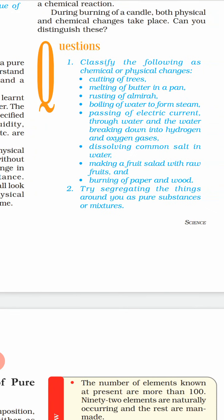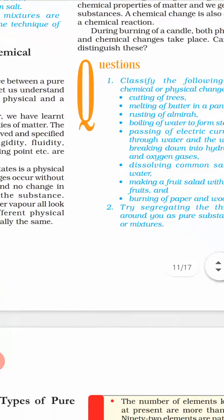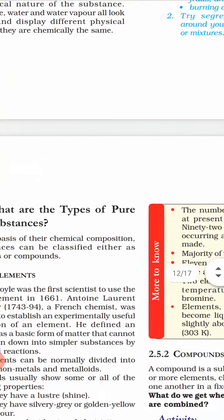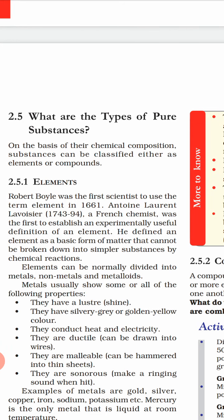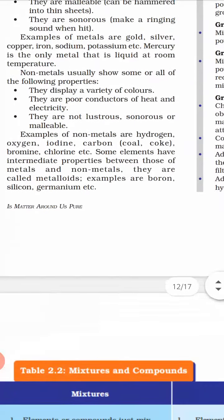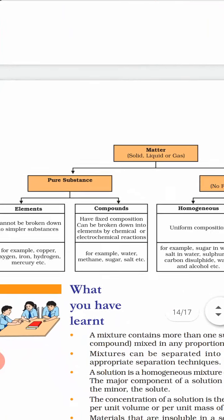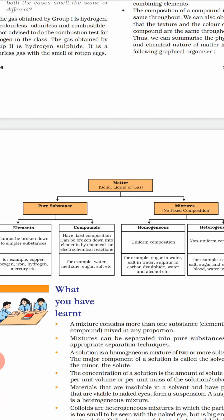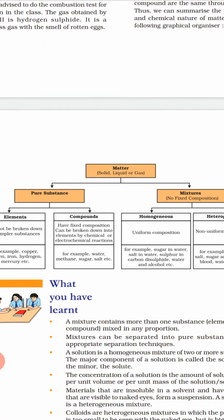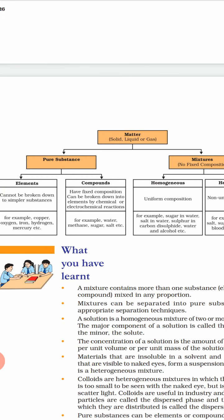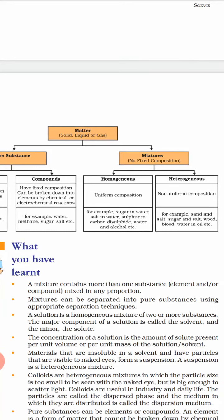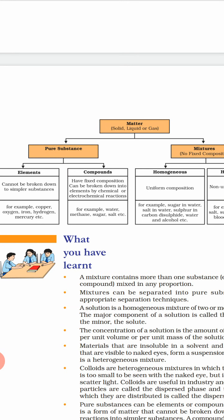Now the next topic: types of pure substances. Matter is classified into two types — pure substance and mixture. These are two different categories of matter. Pure substance is again classified into two types: elements and compounds. Mixtures are also classified into two types: homogeneous and heterogeneous. We have already discussed homogeneous and heterogeneous mixtures; now we are discussing pure substances — elements and compounds.